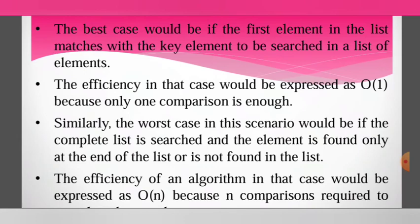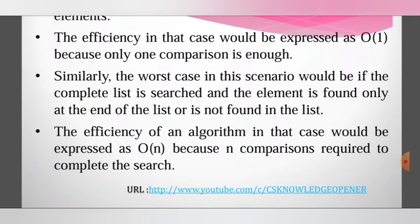The worst case is when the element is not found in the list or is found only at the last position. In this case, n comparisons are required to complete the search, so it is expressed as O of N.